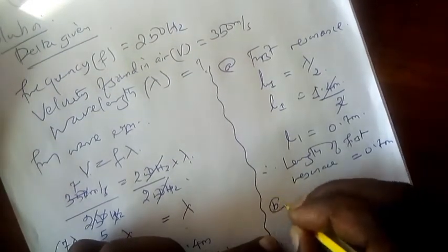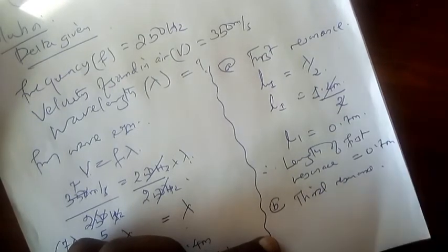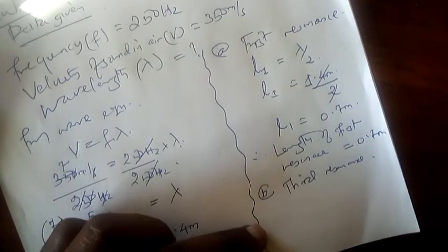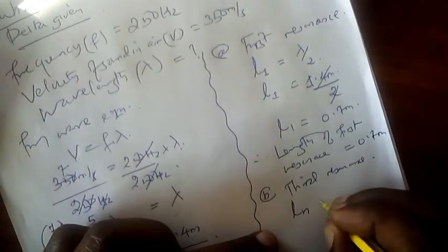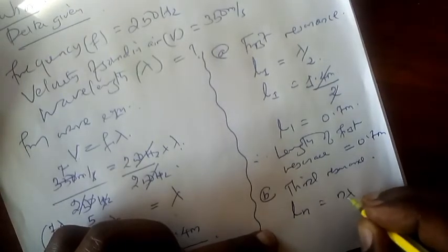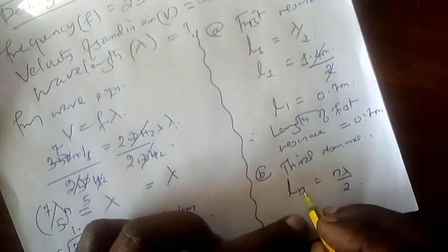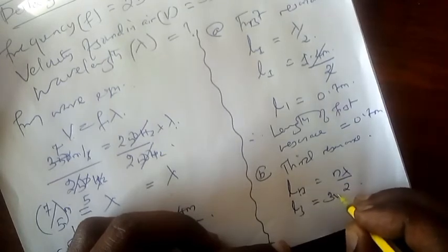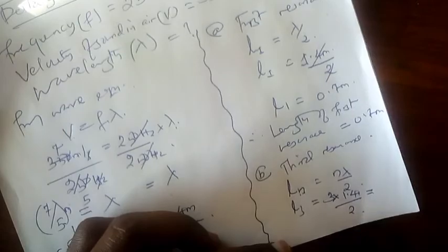Now we find the second part. Part B asks us for third resonance. In third resonance, what do we do? To get third resonance, it's very simple. From the general formula it says L_n equals n times wavelength over 2. Since it's third, n equals 3. So L3 equals 3 times 1.4 meters divided by 2.